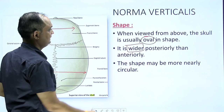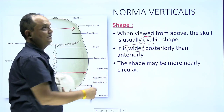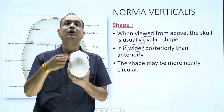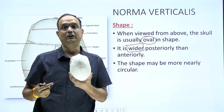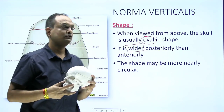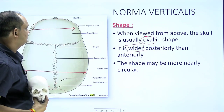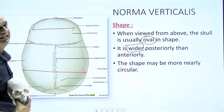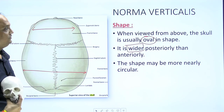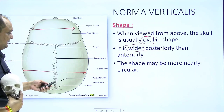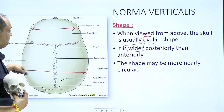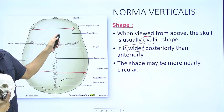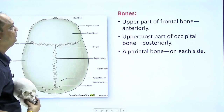The shape may be circular or oval. So the first features are: it is oval in shape and it is wider more posteriorly as compared to the anterior side.